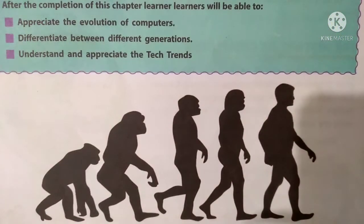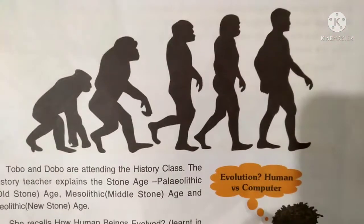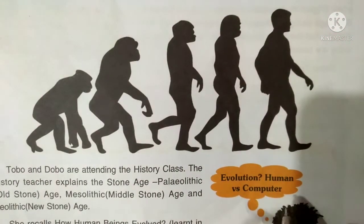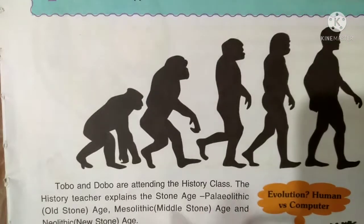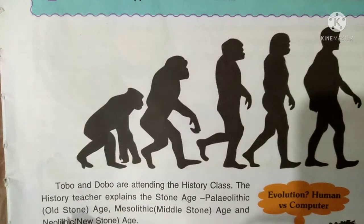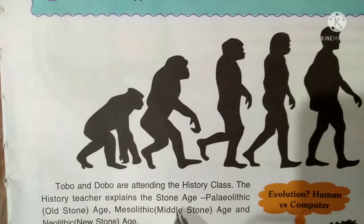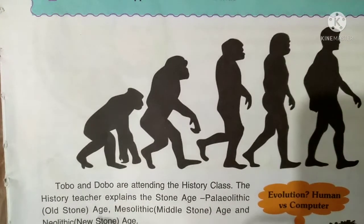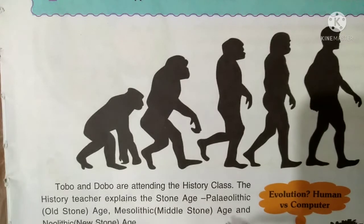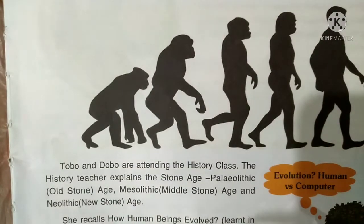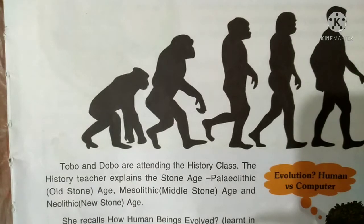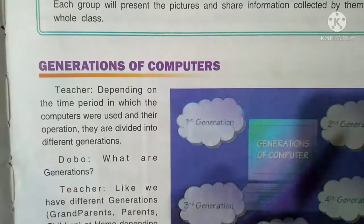Human vs Computer evaluation. Tobo and Dobo are attending the history class. The history teacher explained the Paleolithic age, Mesolithic age, and Neolithic age, and recalled how human beings evolved.